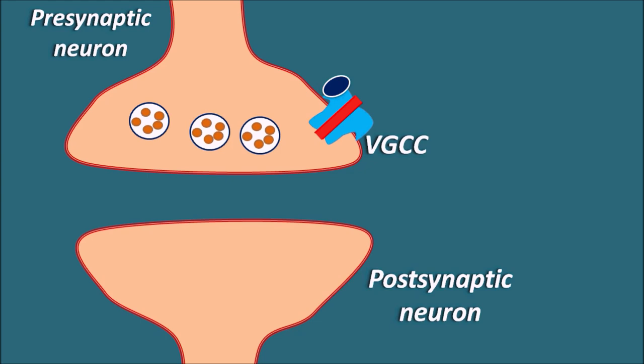The postsynaptic neurons are equipped with a few receptors. For example, NMDA receptors, which are receptors for glutamate, produce an excitatory postsynaptic potential. There are also AMPA receptors, which produce fast excitatory postsynaptic potentials. When these two receptors are activated by glutamate, they produce the excitatory response within the postsynaptic neuron.